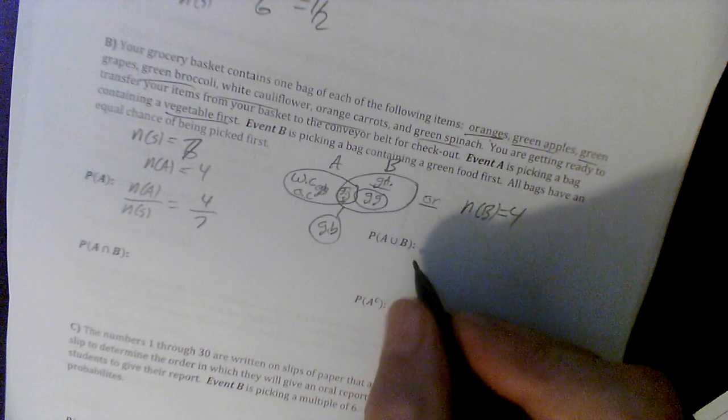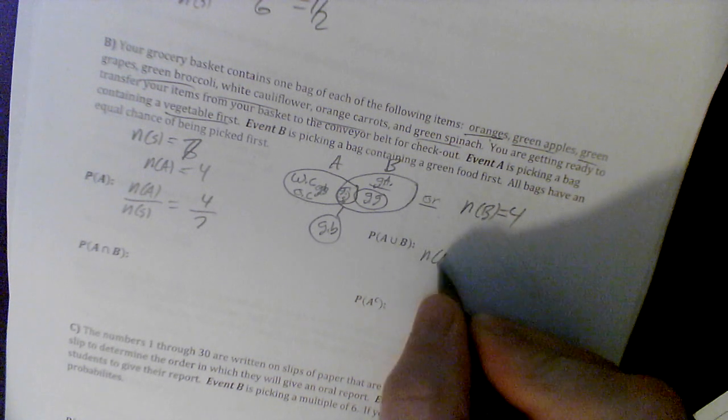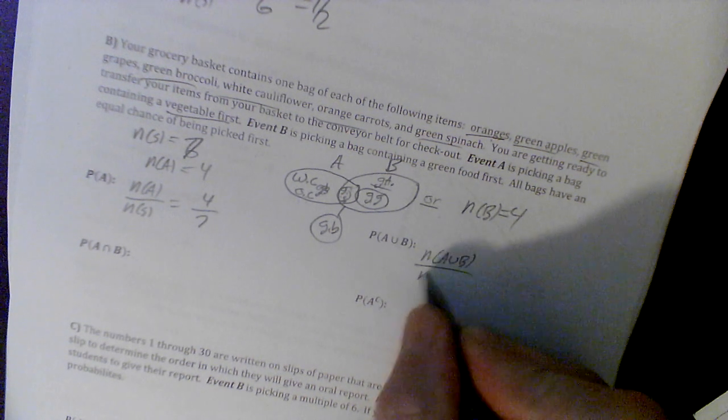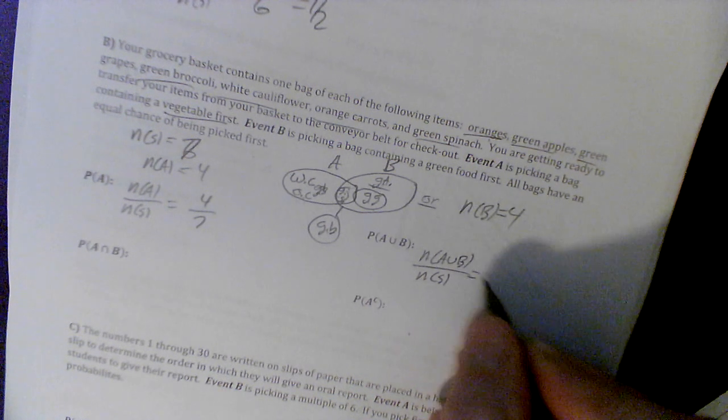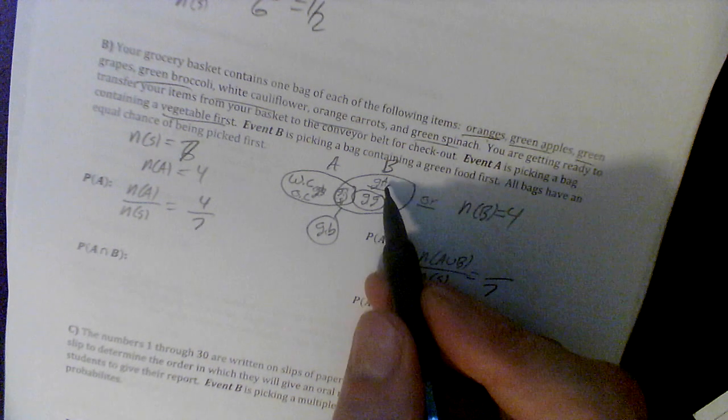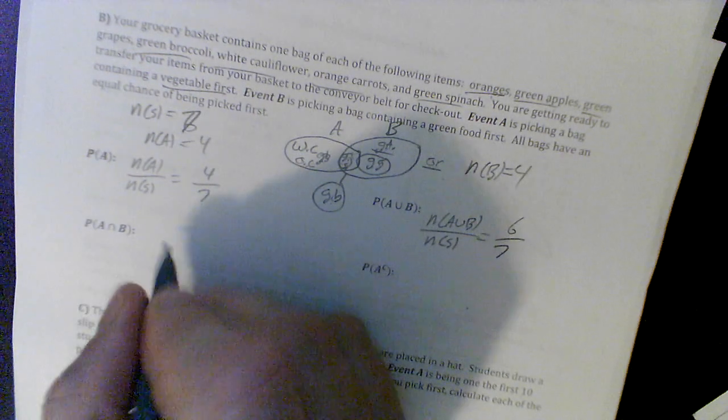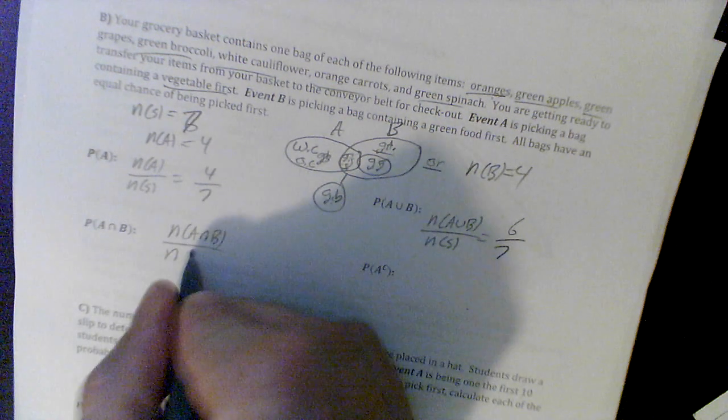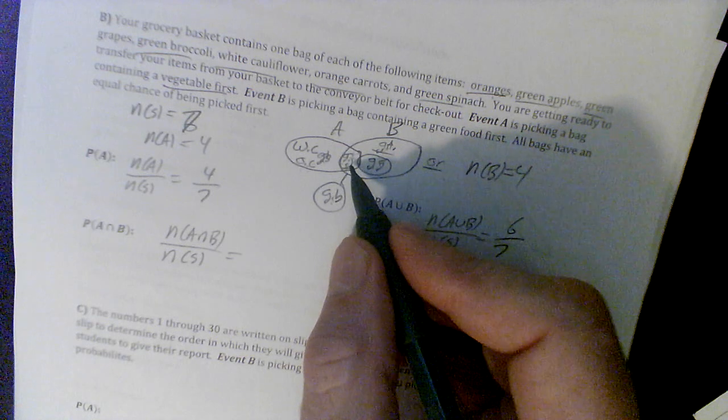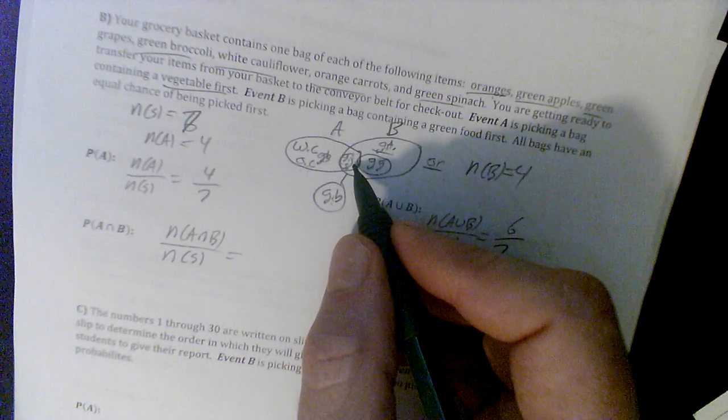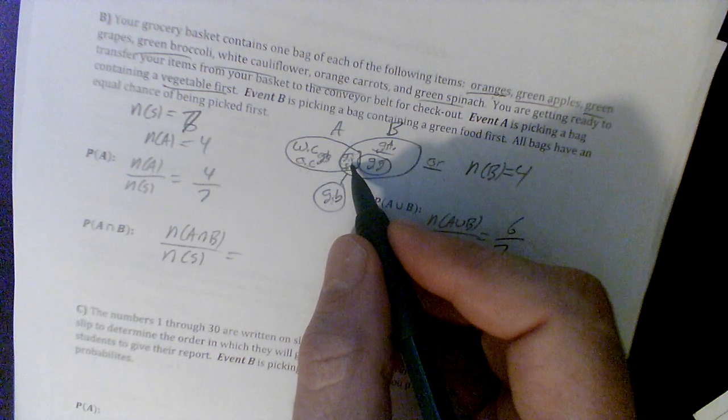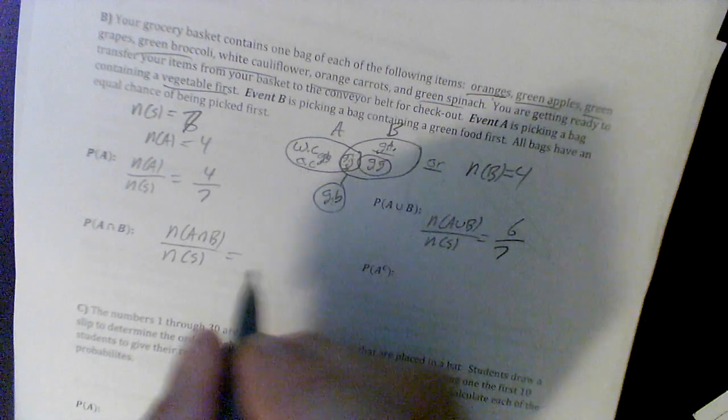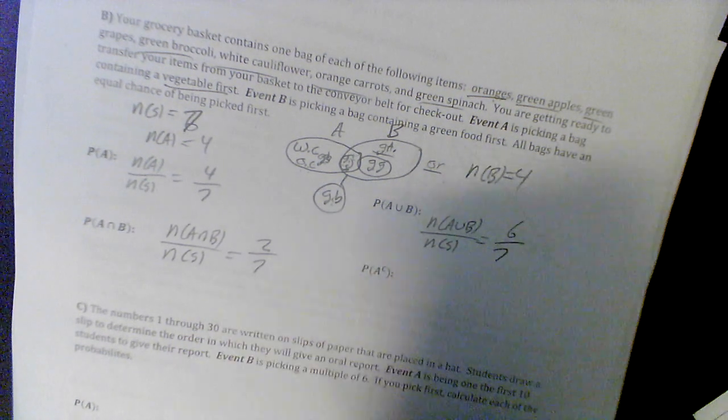Probability of A union B, that's the number in A union B over the number in the sample space. Sample space we know is 7. A union B is everything: 1, 2, 3, 4, 5, 6. Only the oranges are not in there, so 6 sevenths. A intersect B is the number of A intersect B items over the number of the sample space. They only intersect twice with the green broccoli and the green spinach, so this would be 2 out of 7.